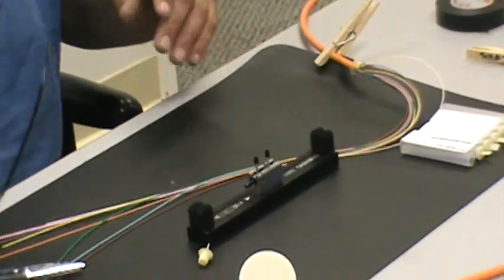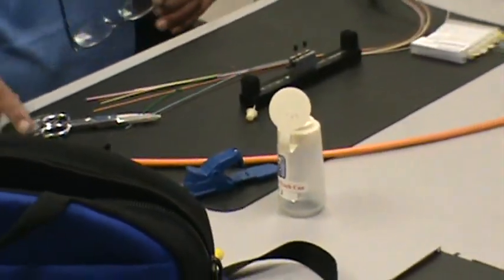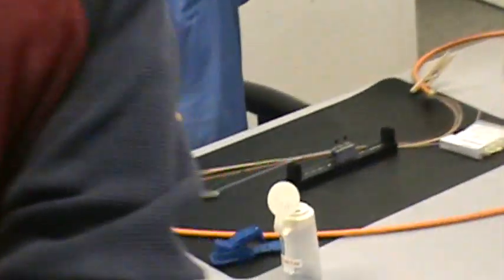Now, why don't one of you come over and pull the outer jacket. You cut and rip it. You cut off the jackets and you cut out the aramid yarn.